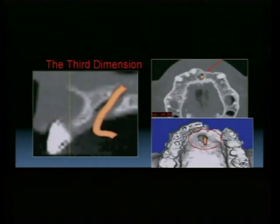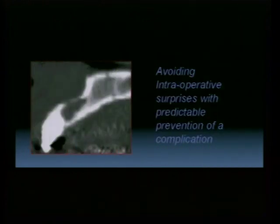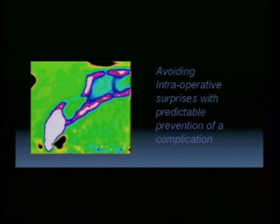The third dimension — as very nicely shown in our previous lecture — demonstrates the power of cone beam technology. Understanding defects before we ever touch a patient is extremely valuable. Avoiding intraoperative surprises through cone beam diagnostics is key. A defect that on a periapical x-ray looks like internal root resorption can be seen three-dimensionally, revealing the true extent of bone and hard and soft tissue loss.